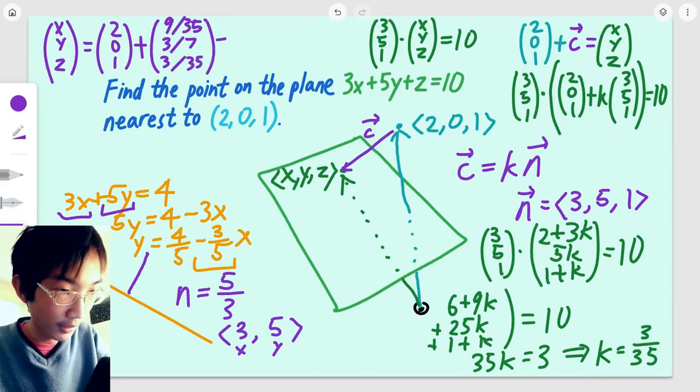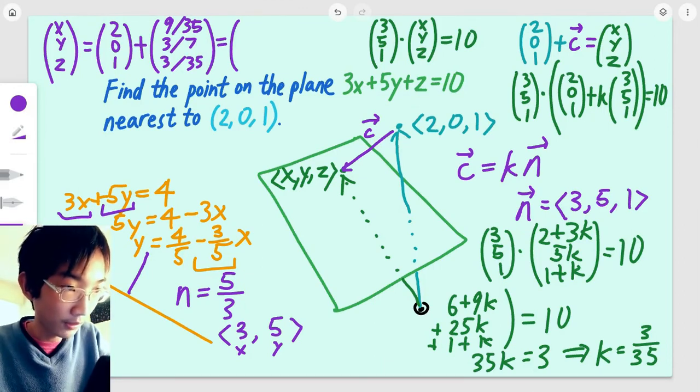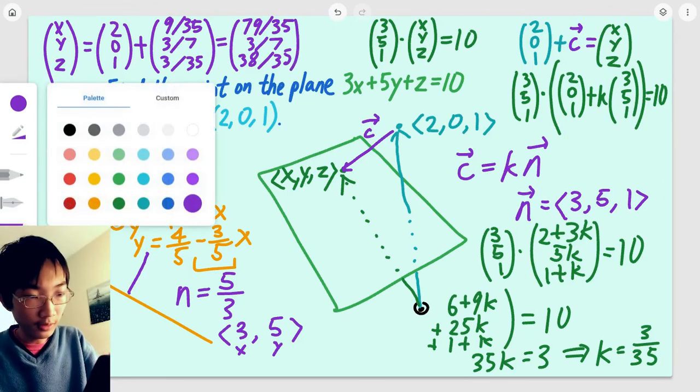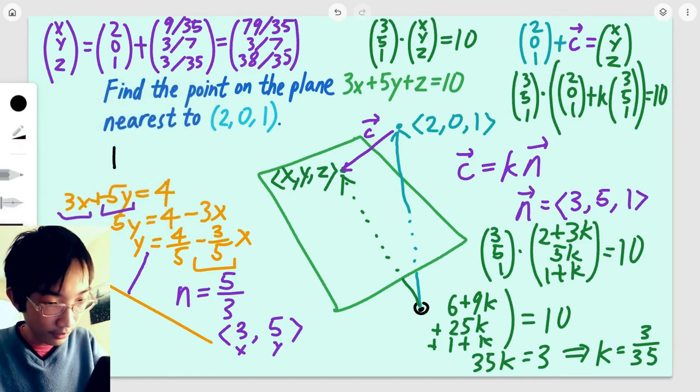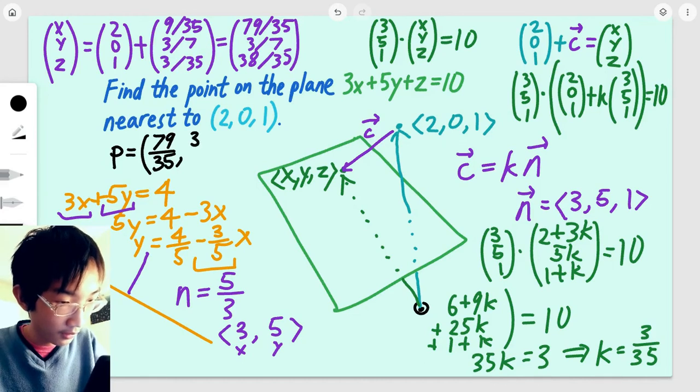When we add them up, we get 2 times 35, that's 70. 70 plus 9, so that's 79/35. 0 plus 3/7, that's 3/7, and 1 plus 3/35, that's 38/35. So, that's our final answer: point P equals (79/35, 3/7, 38/35).